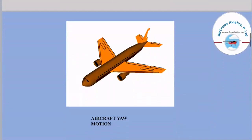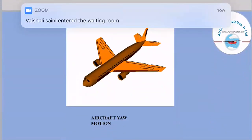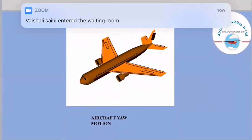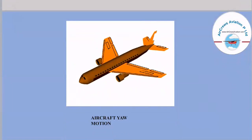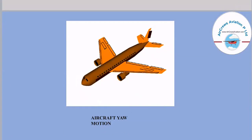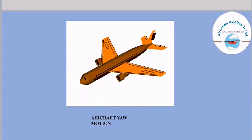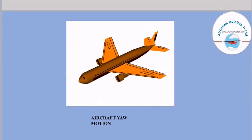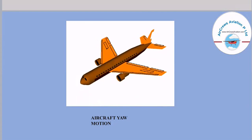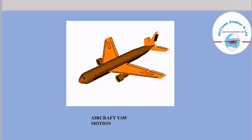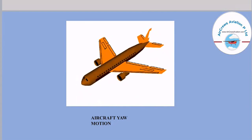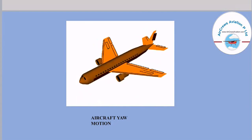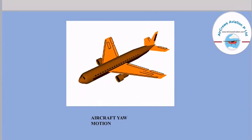Next we have the aircraft yaw motion, which is basically for a left or right turn. This motion is controlled by the control surface at the tail position of the aircraft, known as the rudder. It turns the aircraft left or right, and here we can see a clear view of that motion.